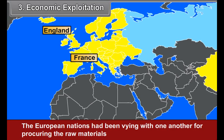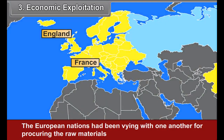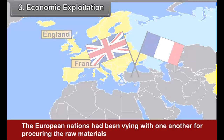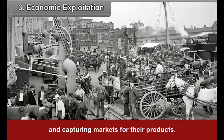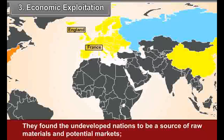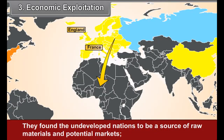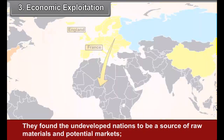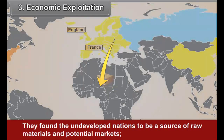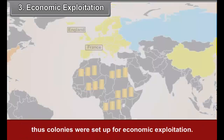Third, economic exploitation. The European nations had been vying with one another for procuring raw materials and capturing markets for their products. They found the undeveloped nations to be a source of raw materials and potential markets. Thus, colonies were set up for economic exploitation.